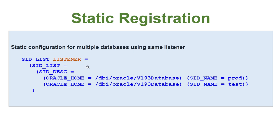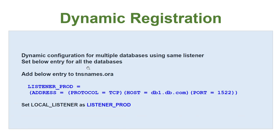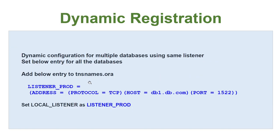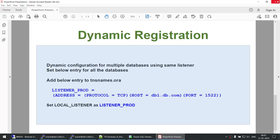You can also create multiple listeners and register databases with each. For dynamic registration, you can also have one listener serving multiple databases — you add an entry in tnsnames.ora and set the local listener to that parameter in all the databases. So this concept covers how to use the same listener for multiple databases using both static registration and dynamic registration. Let's go ahead and see the tutorial.